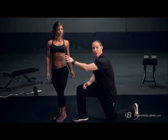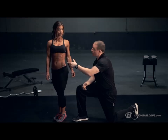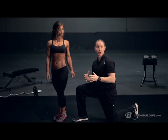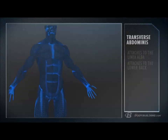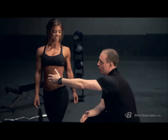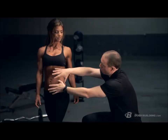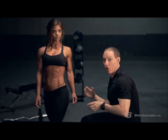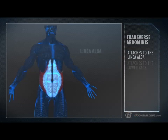Also in that deep layer you have what's called your transverse abdominis. It runs from your linea alba here on the front — which is just a fancy name for a big attachment point — all the way around and attaches onto your lower back. Those three muscles work in concert to help pressurize your deep inner core musculature.